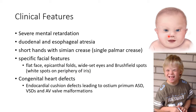This picture shows an illustration of a child with Down syndrome, and this is a real image of a child with Down syndrome. Note the flat face, epicanthal folds, and wide-set eyes. These patients also have congenital heart defects like endocardial cushion defects leading to ostium primum atrial septal defect, ventricular septal defects, and AV valve malformations.